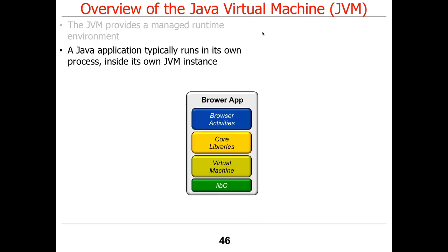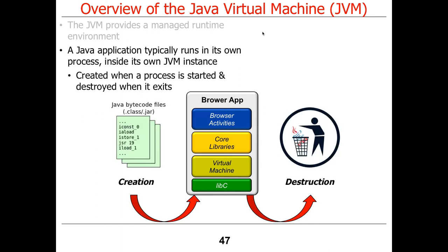A Java application typically runs inside its own process, inside its own JVM instance. If you have a Java-based browser application running on Android, it runs inside a process. Some parts are written in C, some in Java, some in a combination — that's what makes your entire app this stack of multi-languages working together in a managed context. When the process starts up, the virtual machine is started, the bytecode is loaded and run, and when everything is done, it's destroyed and goes away.